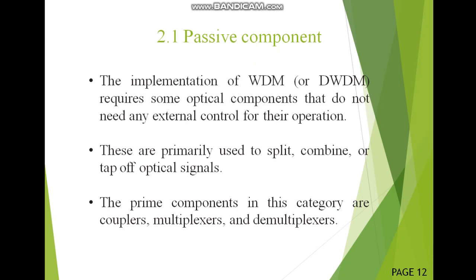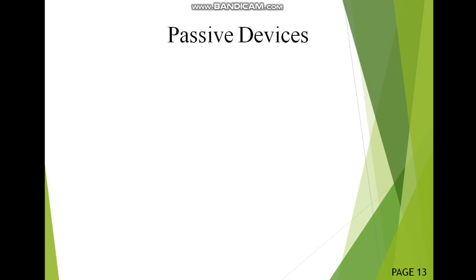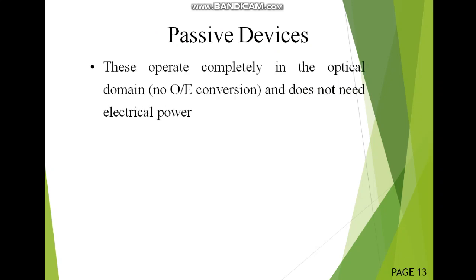The implementation of WDM requires some optical components. These optical components are passive components. They could be wavelength selective or wavelength dependent. Passive components are required to design a passive device. So what do we mean by passive here? Passive means we don't need any optical to electrical conversion in the device. Also, we don't need electrical power. So passive devices don't require optical to electrical conversion or electrical to optical conversion.